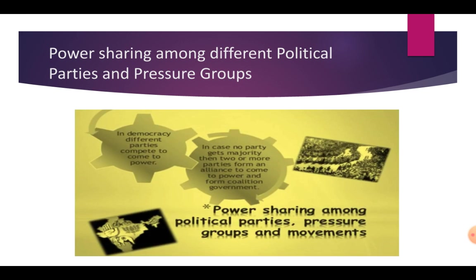The fourth form is power shared among different political parties या pressure groups. आपने ninth class में अच्छे से पढ़ा था कि democracy के अंदर different political parties होती हैं, और ये political parties power लेने के लिए एक दूसरे के साथ election में compete करती हैं, और majority मिलने पर power को enjoy करती हैं. यदि किसी party को clear majority न मिले, तो दो या दो से ज़्यादा political parties alliance बना लेती हैं, जिसे हम coalition government कहते हैं.